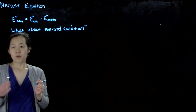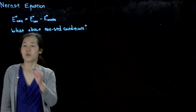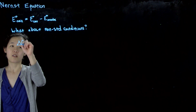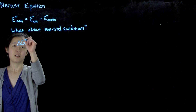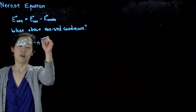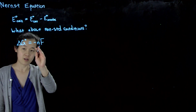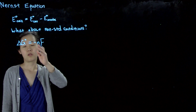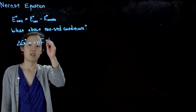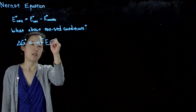To handle non-standard conditions, we can go back to thermodynamics and what we already know. We were able to previously express the standard free energy of reaction, delta G-naught, in terms of our standard cell potential: negative N — the number of moles of electrons per reaction — times the Faraday constant, which is the coulombs per mole of electrons, times the standard cell potential.